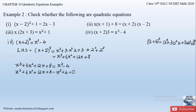After cancellation of the x³ terms, we are left with 6x² + 12x + 8 + 4 = 0, which gives 6x² + 12x + 12 = 0.